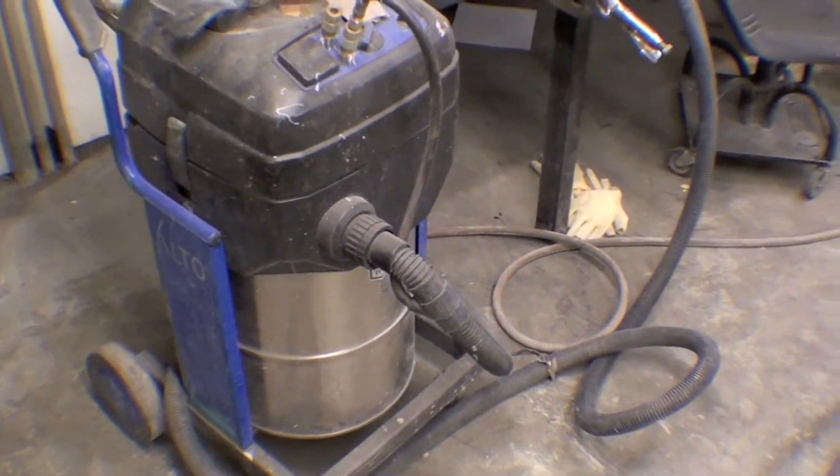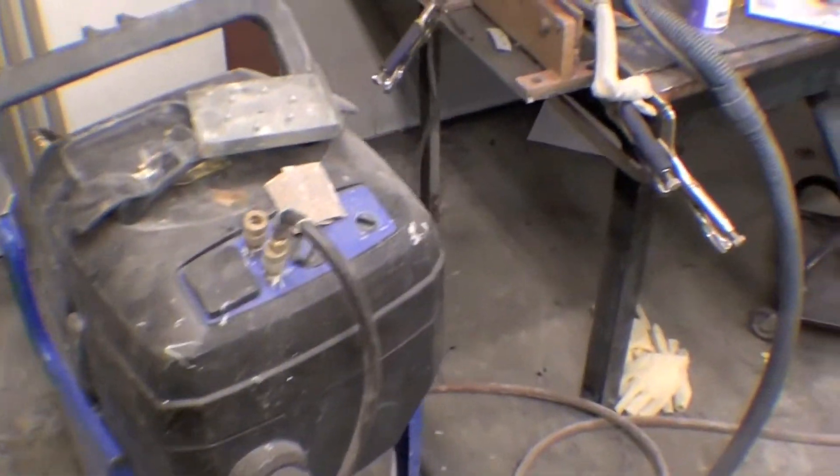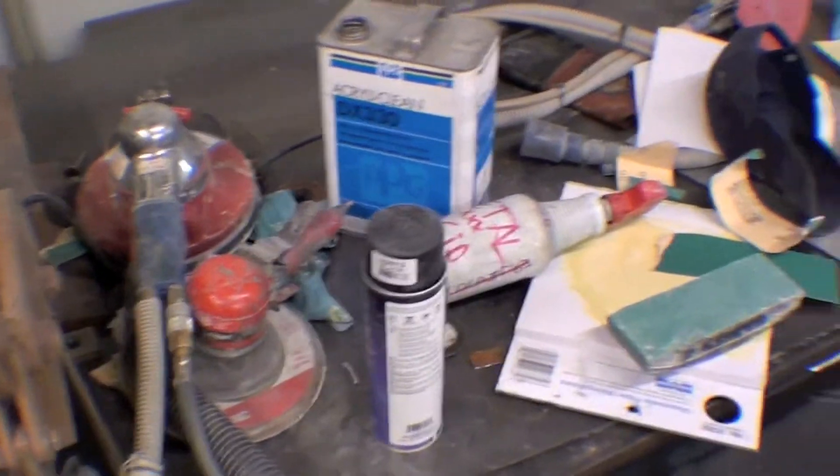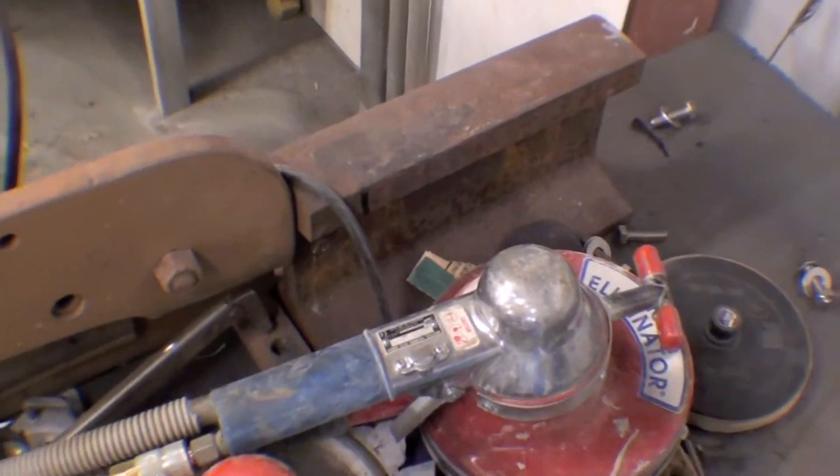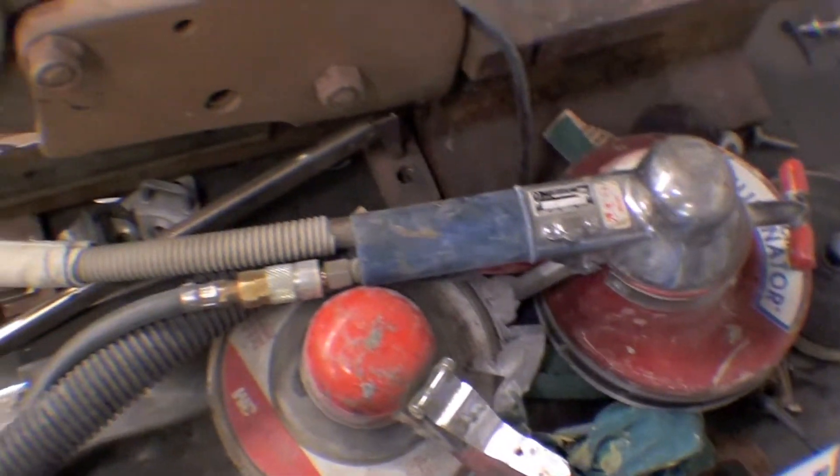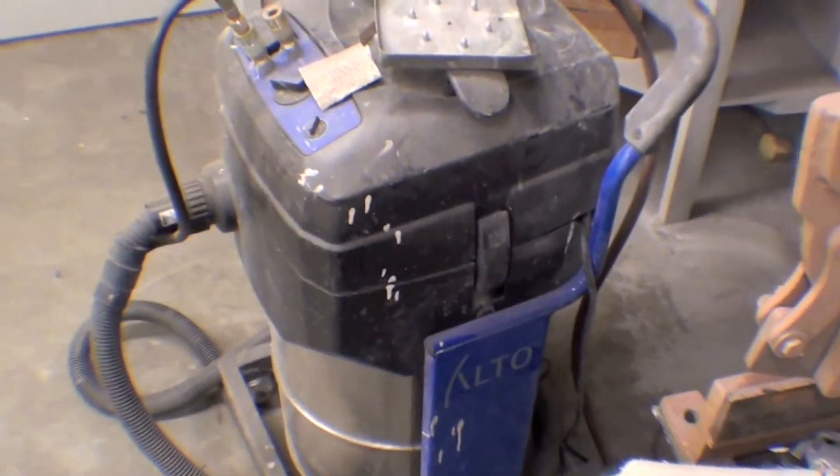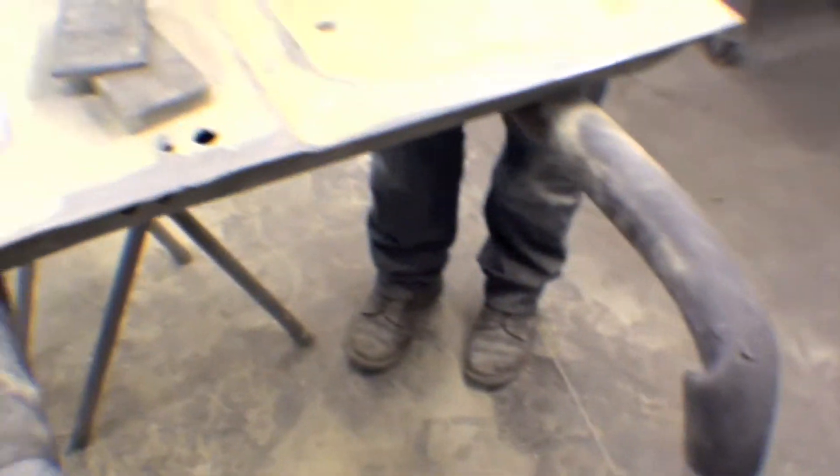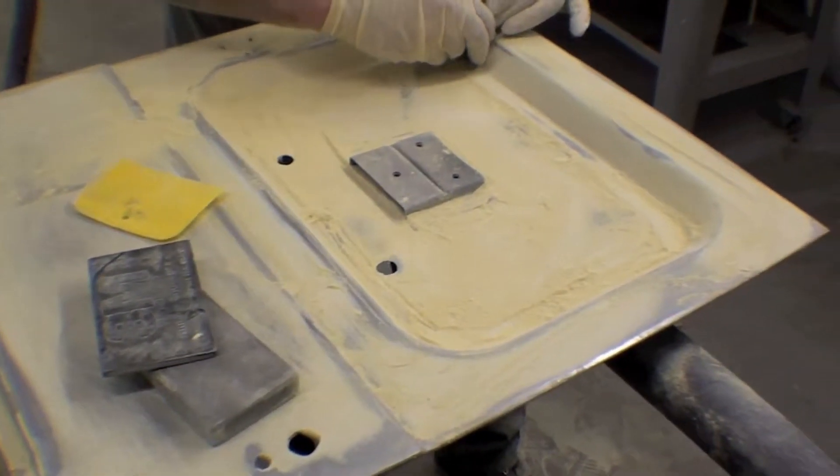We use the Alto vac and the vac system that works with what we call the big hogger or the eliminator. It's a big air tool to start out with. It vacs it down, knocks the bigger part of the body filler out, and then the rest of it's done by hand.